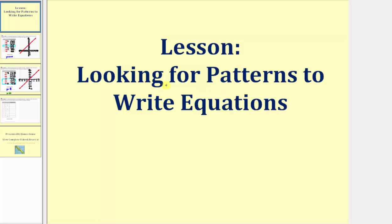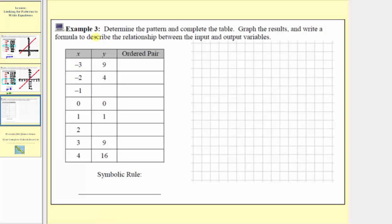Welcome to part three of the lesson on looking for patterns to write equations or formulas. Example three is the same as the first two examples. We're asked to determine the pattern and complete the table, graph the results, and write a formula or equation to describe the relationship between the input and output variables.